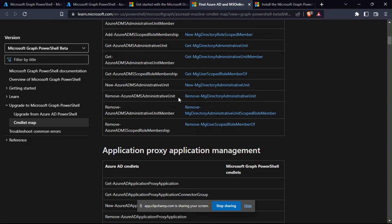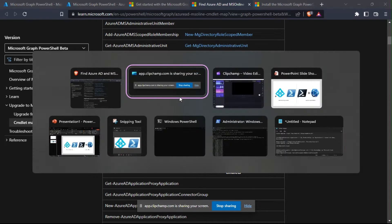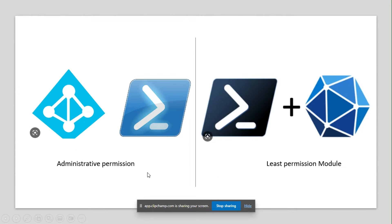Microsoft Graph PowerShell SDK follows the least privilege model. There's a significant difference between the Azure AD PowerShell module and the Graph API PowerShell module. When you sign in using the Connect-AzureAD commandlet you can use all the administrative permissions owned by the account you sign in with. However, the Graph API operates on the least privilege model, which means you must request permission to perform the action even when connecting with a highly privileged account.